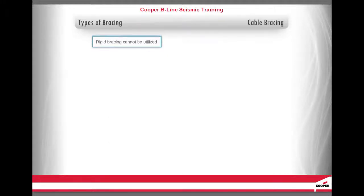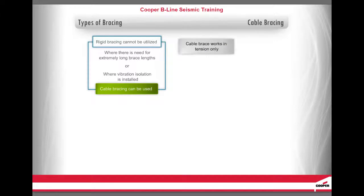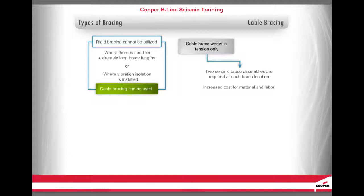In instances where rigid bracing cannot be utilized — such as the need for longer brace links or where vibration isolation is installed — cable bracing can be used as an alternative option. For a cable brace, since it works in tension only, two seismic brace assemblies are required at each brace location. In comparison to rigid bracing, there is an increased cost for both material and labor, but in some cases it is the only choice available.